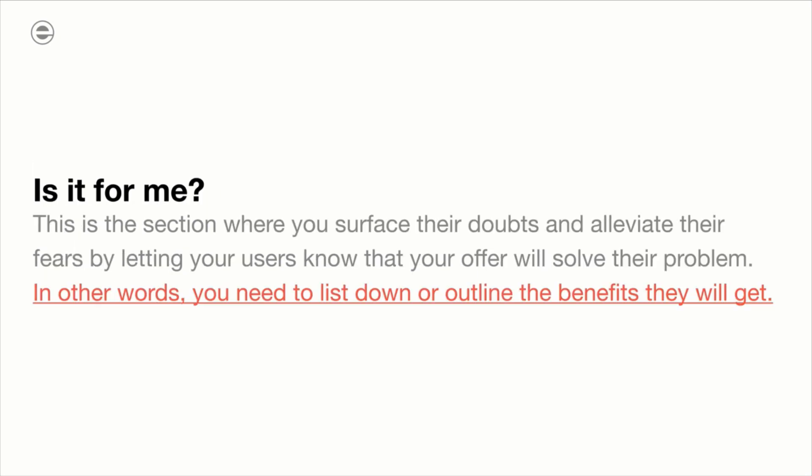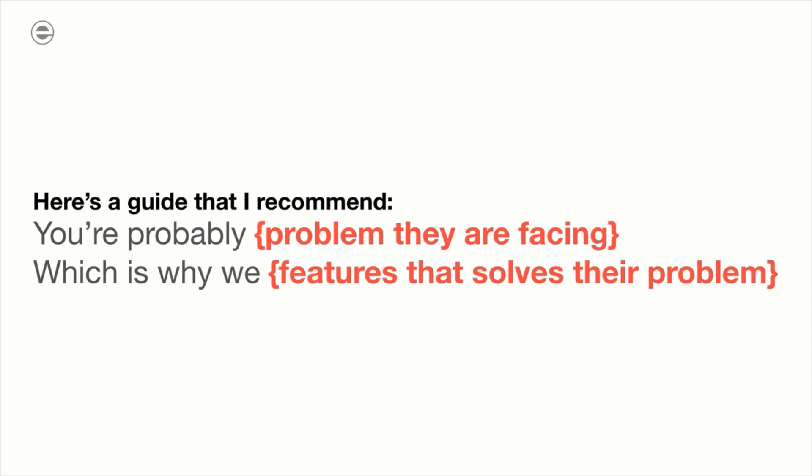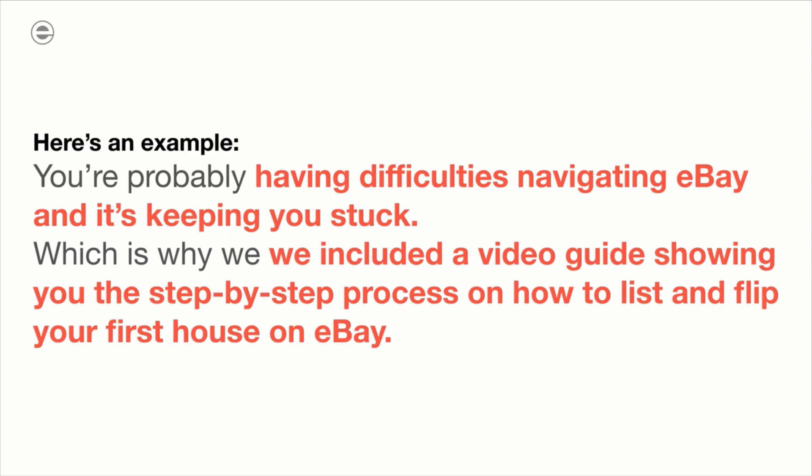The next question that needs to be answered is: is it for me? This is the section where you surface their doubts and alleviate their fears by letting users know that your offer will solve their problem. A common practice I've noticed from other SaaS companies is they just list down the features of their app — they don't know how to write benefits. Here's the guide I follow: 'You're probably facing [the problem], which is why we [the feature that solves their problem].' Example: 'You're probably having difficulties navigating eBay and it's keeping you stuck, which is why we included a video guide showing you the step-by-step process on how to list and flip your house on eBay.' Use this guide for every feature to position your brand as a solution to their problem.